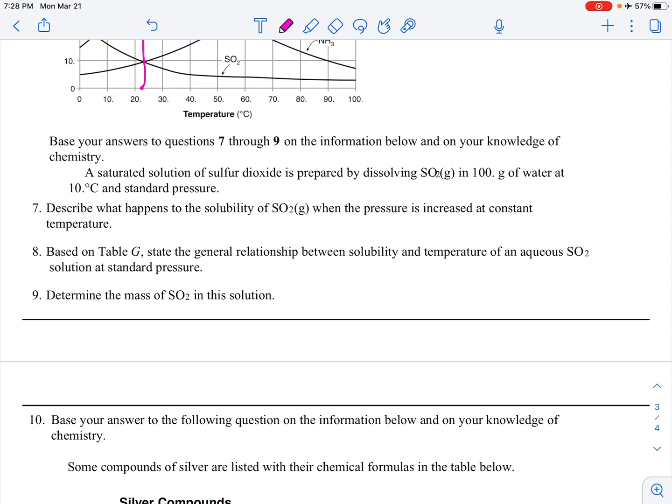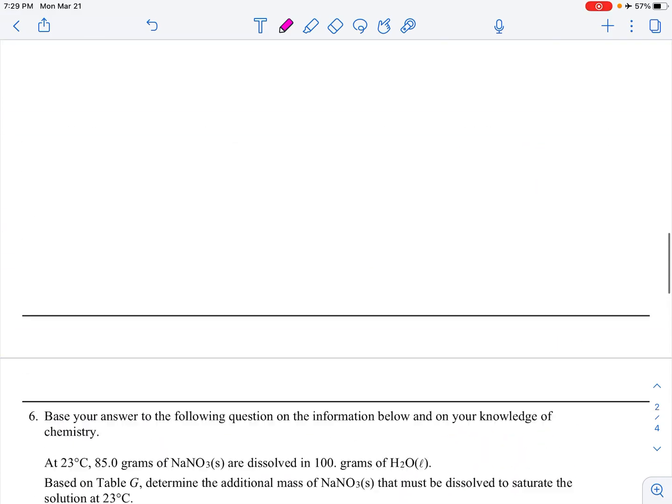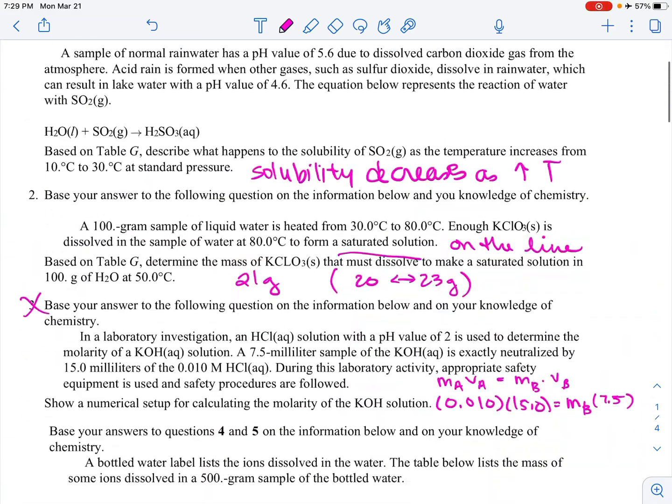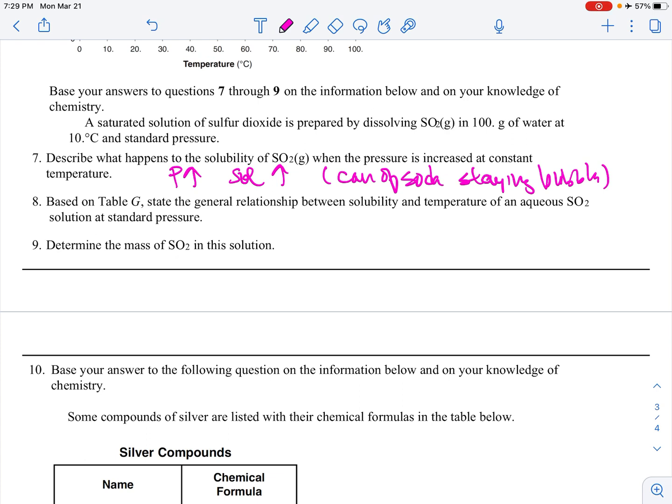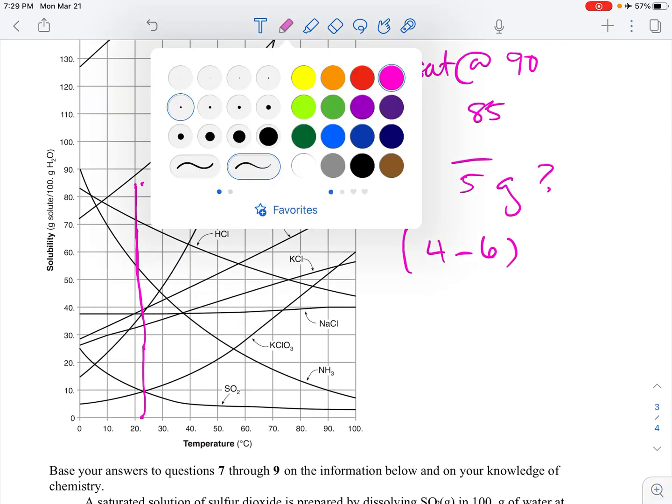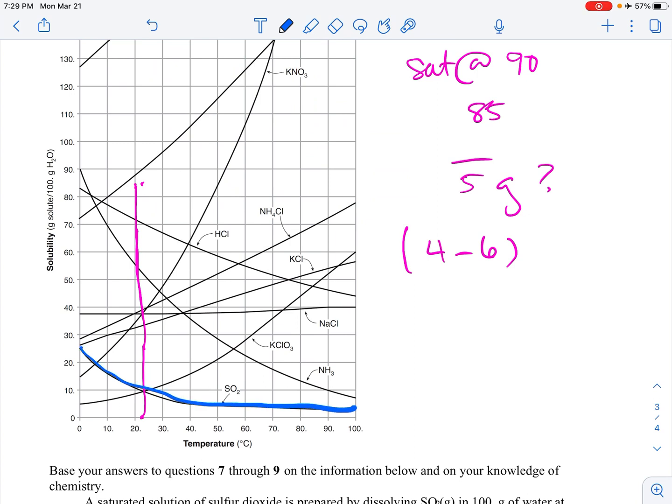Okay. A saturated solution of sulfur dioxide is prepared by dissolving SO2 in 100 grams of water at 10 degrees in standard pressure. Describe what happens to the solubility of SO2 when the pressure is increased at constant temperature. When pressure is increased, solubility will also increase. Think of a can of soda staying bubbly. Based on table G, state the general relationship between solubility and temperature of an aqueous SO2 solution at standard pressure. Didn't we have this exact question before, pretty much? Well, just goes to show, they like to repeat themselves. So as temp increases, solubility decreases. And here it is. So here's SO2 going down in solubility as the temperature increases.